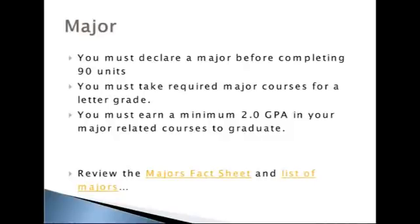At this point you might be wondering, what about my major? Each major at UCSD has specific requirements in addition to your college requirements. It is important to check with your major department to learn how to fulfill your major requirements. You will need to declare a major before you reach 90 units, take required major courses for letter grade, and earn a minimum 2.0 GPA in your major. Each major department at UCSD has an advising office.